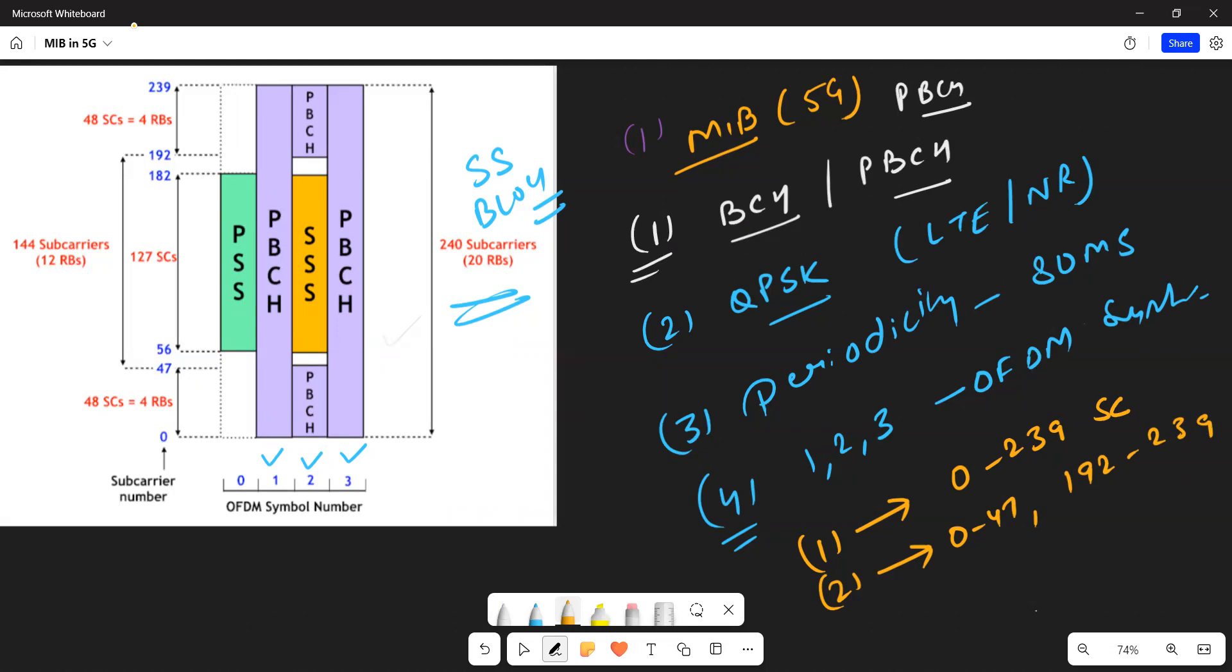On third OFDM symbol, it's transmitted over 240 subcarriers and the range is 0 to 239. Here it's transmitted over first, second, and third OFDM symbol.